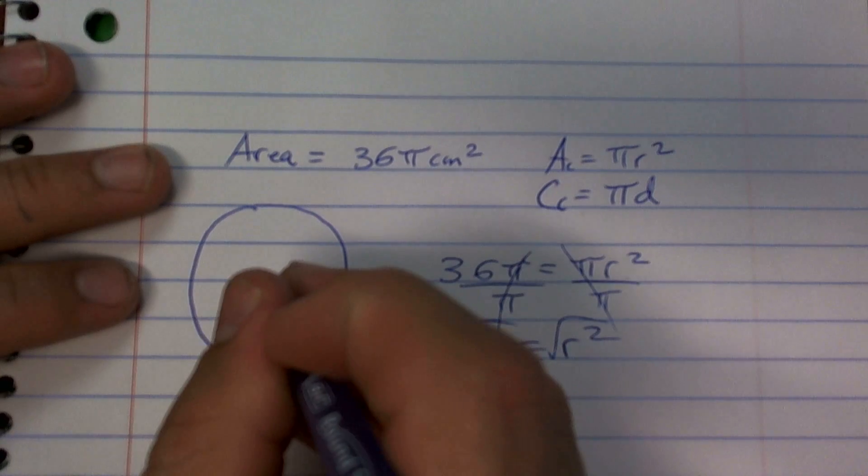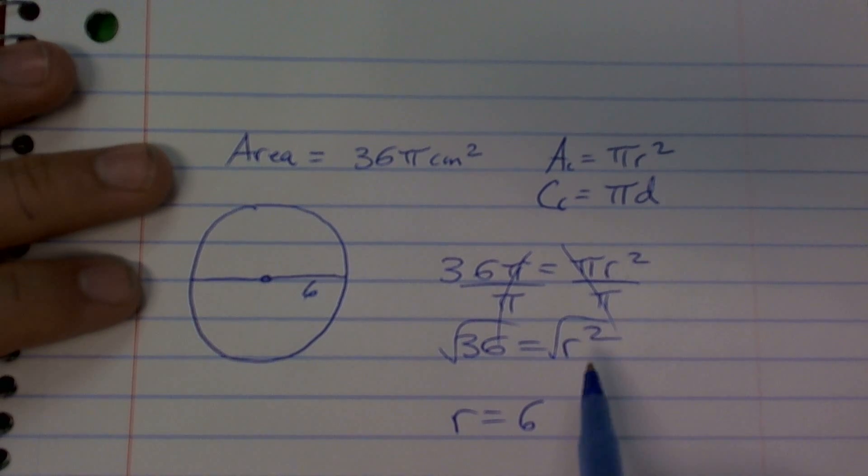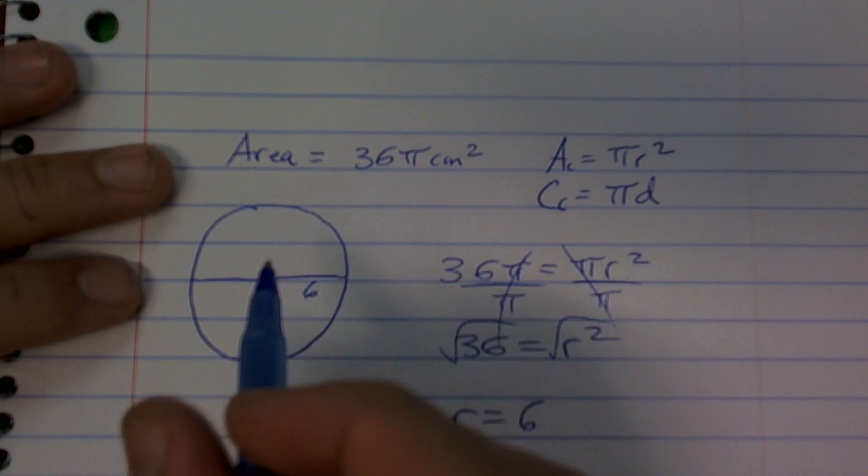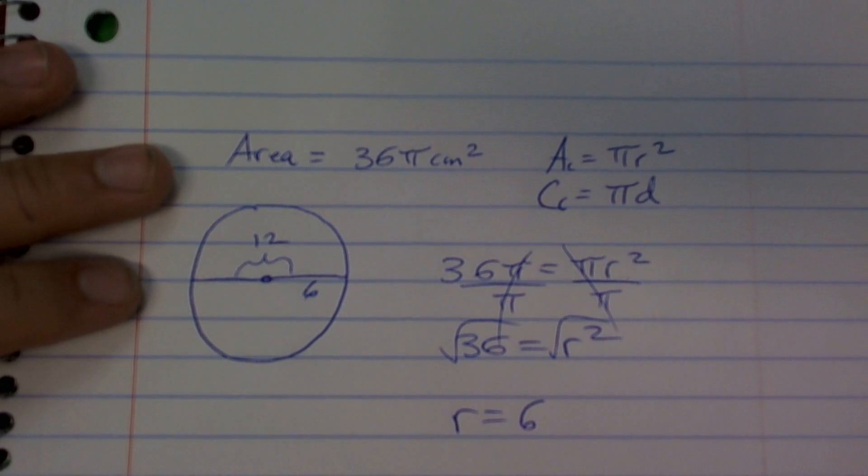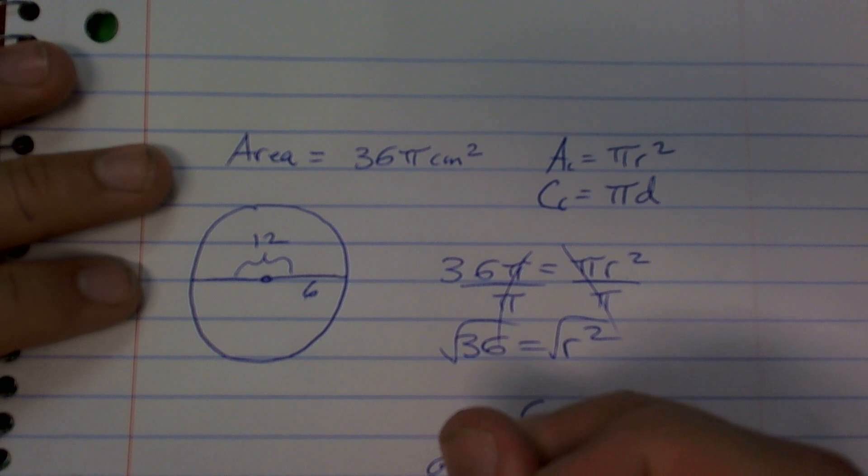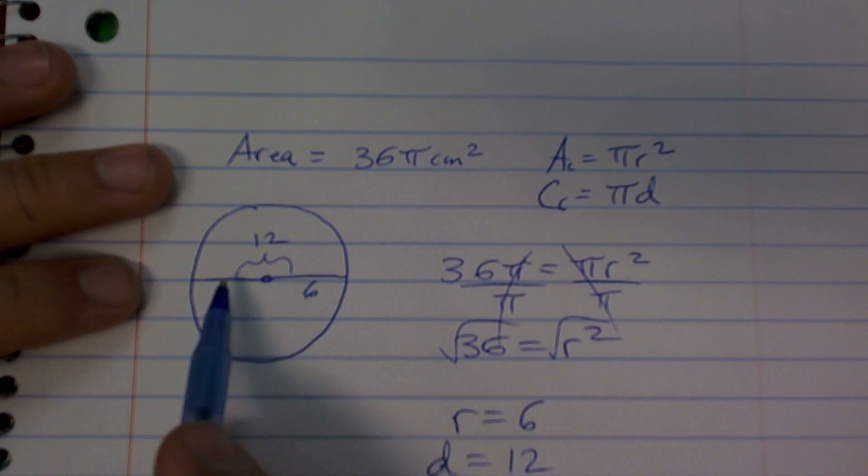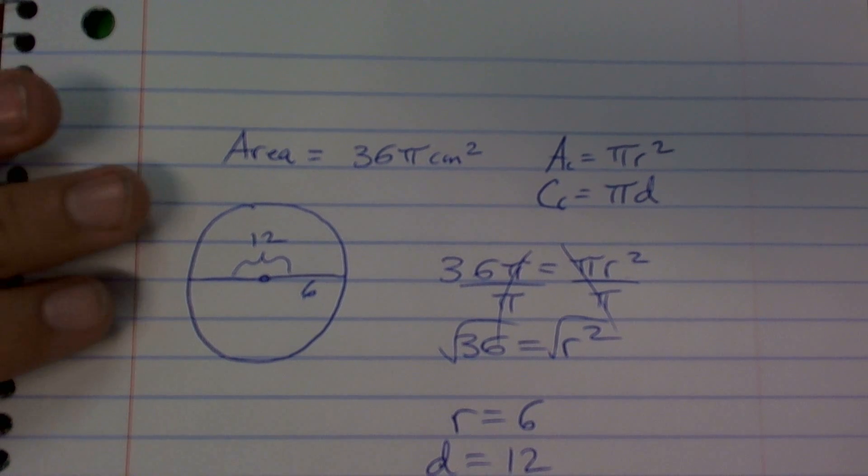But they want to know what is the distance of the diameter. So the distance of that diameter is just double my radius, which is going to be 12. So I can say my diameter equals 12 just because of looking at it from the picture. Does that make sense? Yeah. Okay.